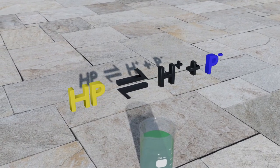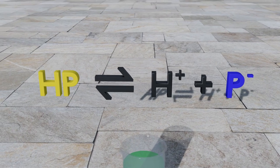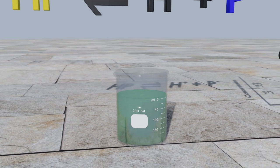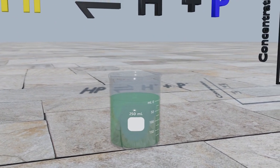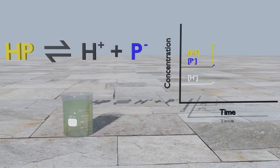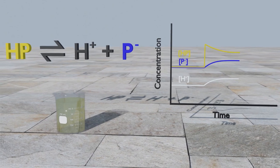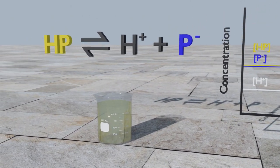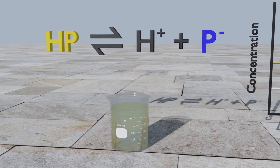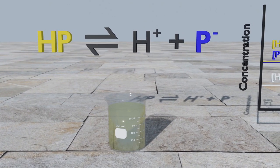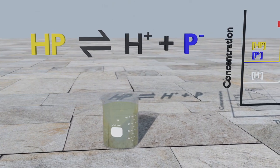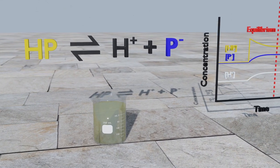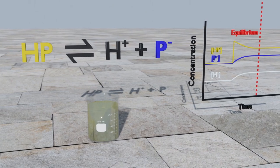Consider the following equilibrium system: HP is yellow while P⁻ ions are blue. A green solution indicates equal concentrations of HP and P⁻ and therefore a 50 percent yield. If we added some yellow HP to a green equilibrium mixture, the system will proceed to the right to remove some of the added HP. However, when equilibrium is restored, the solution is still yellow, so we know the equilibrium position has shifted left. This doesn't mean the system has proceeded to the left. There is a difference between the equilibrium system shifting in response to a stress, as described by Le Chatelier's principle, and the equilibrium position shifting as a possible result.